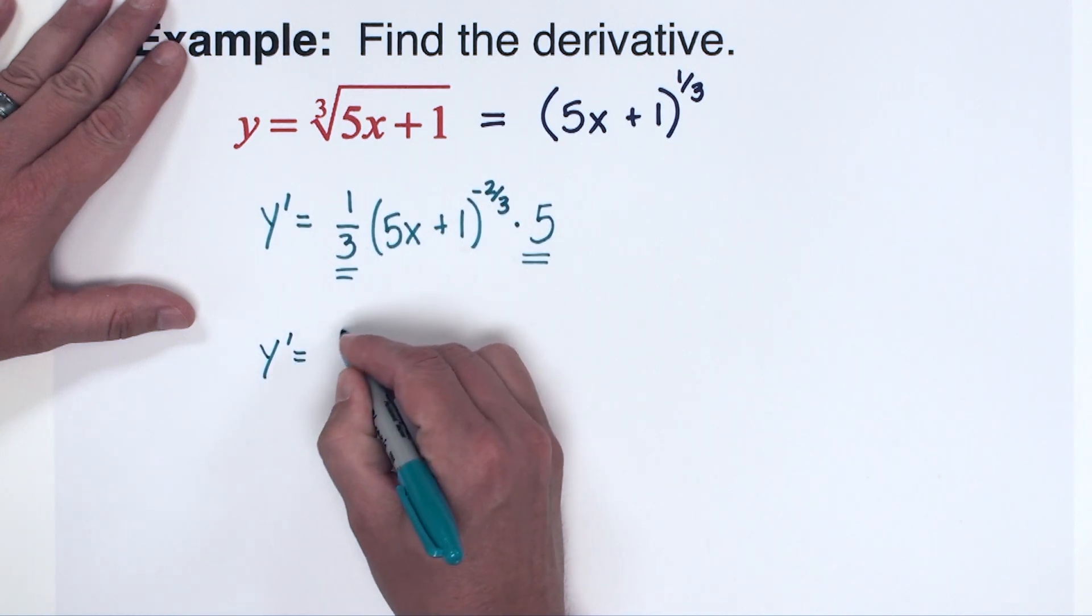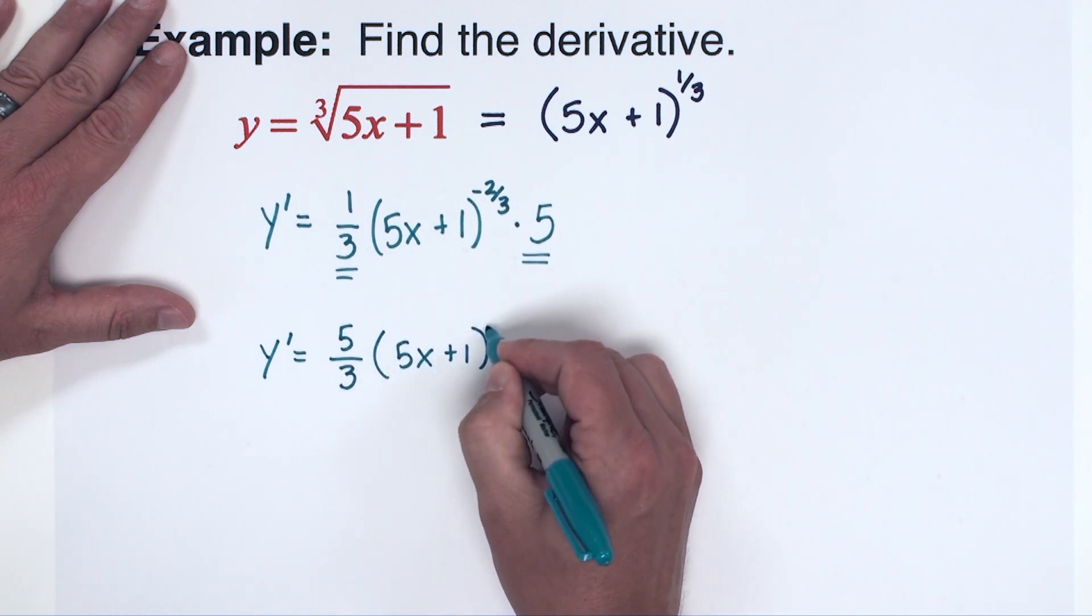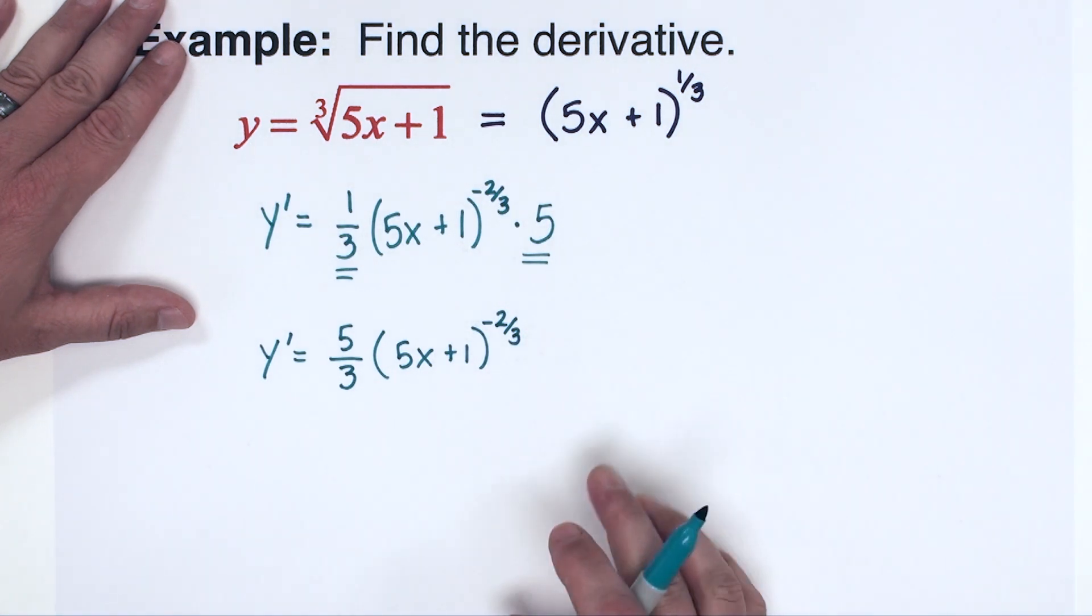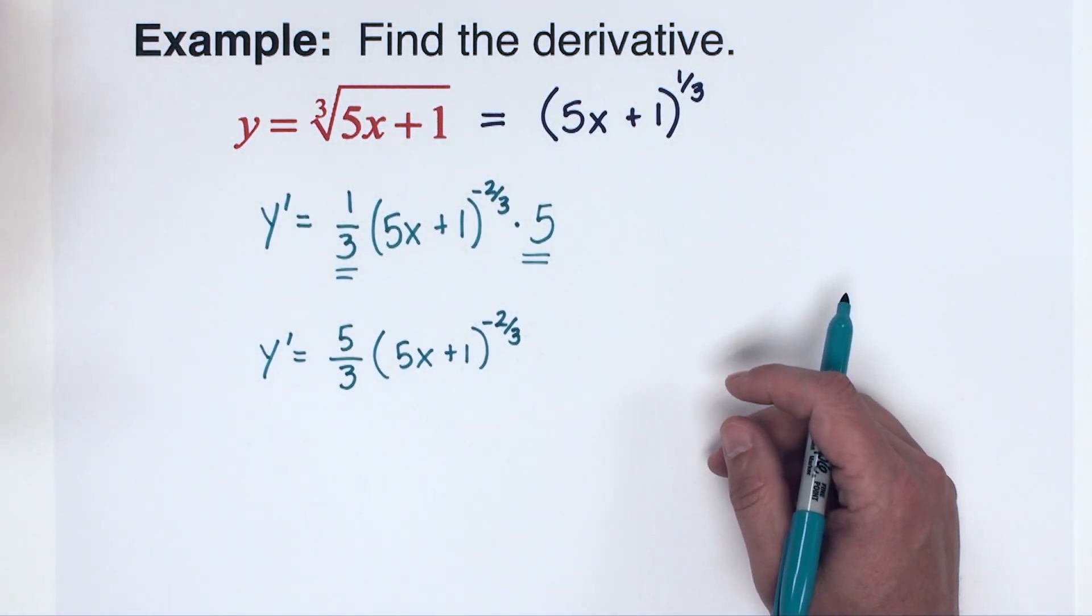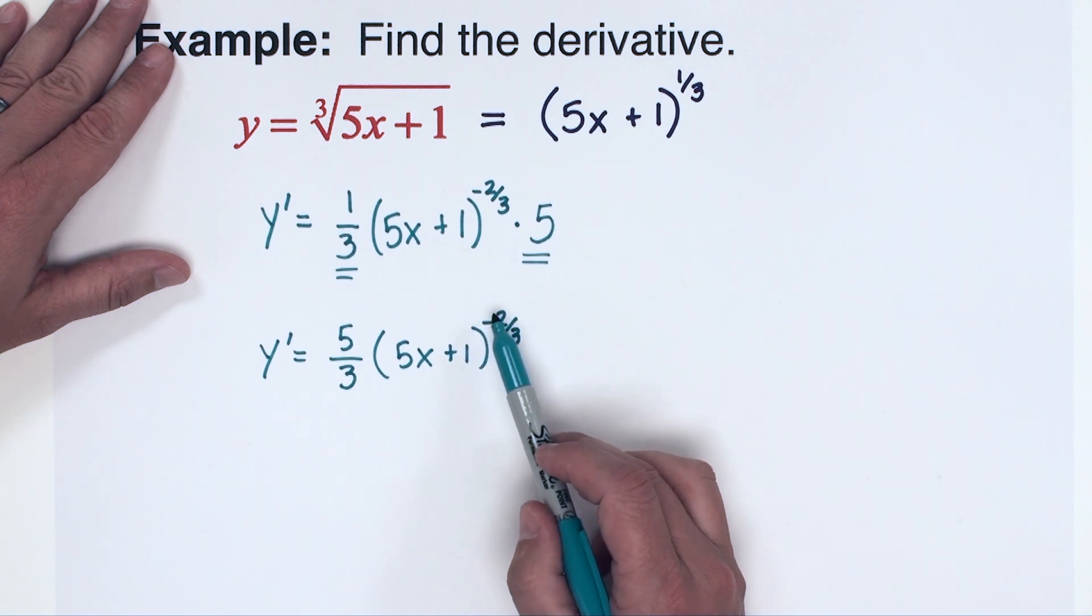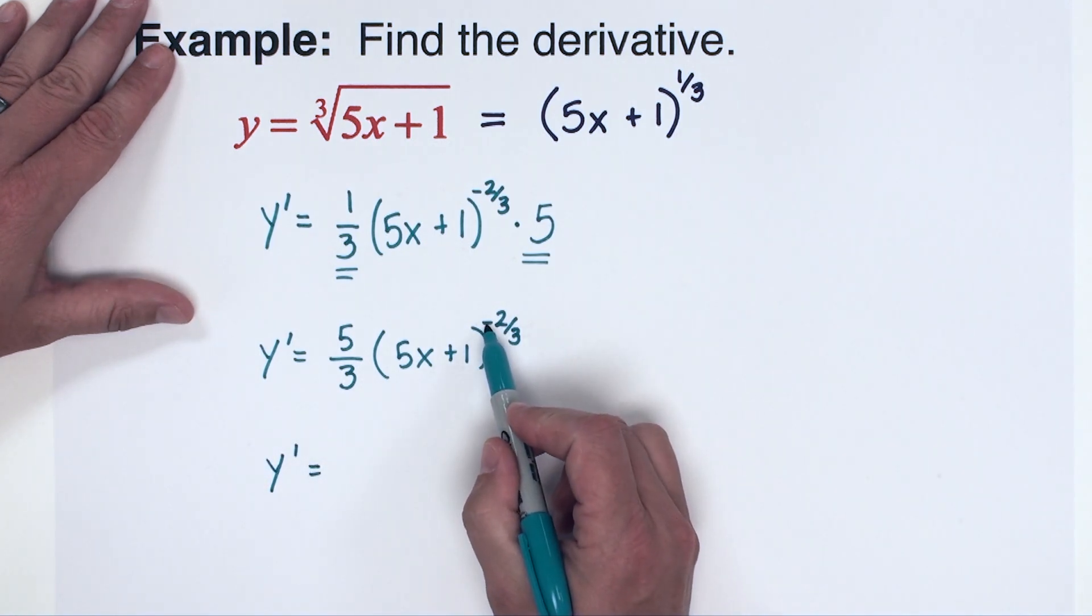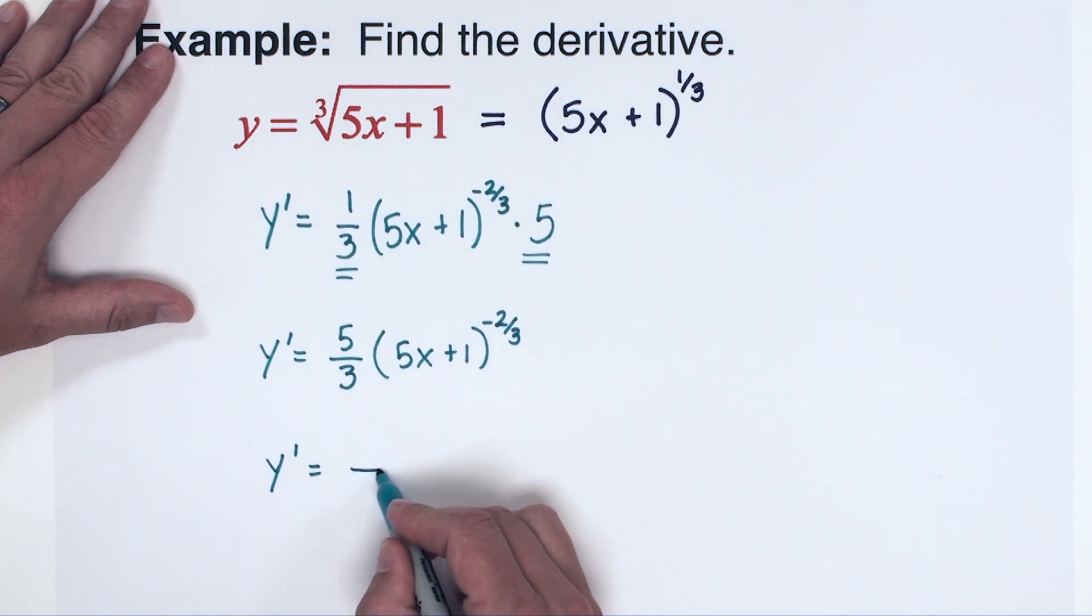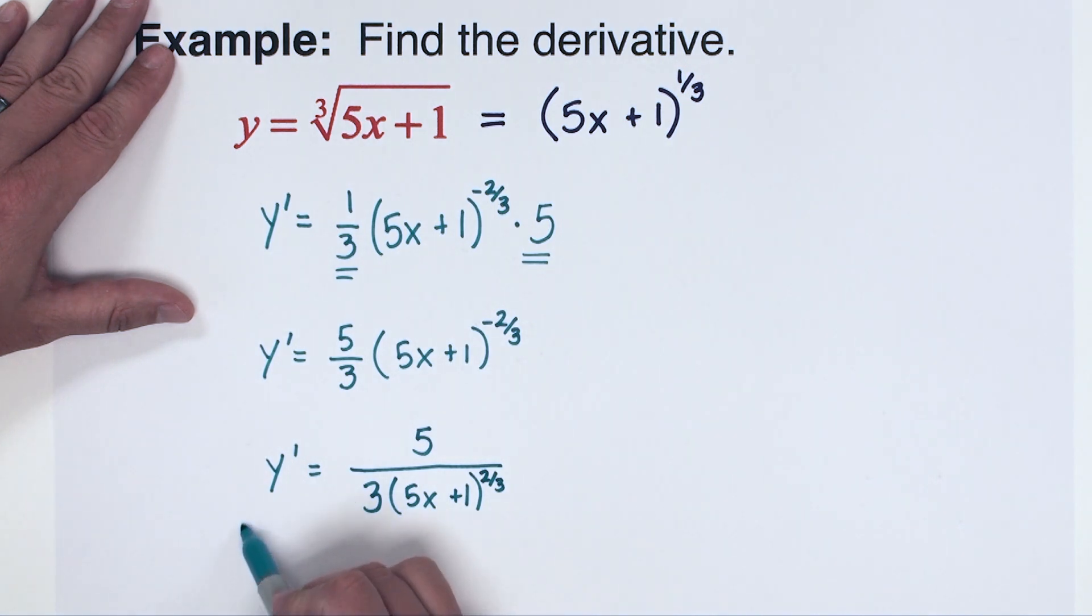Okay, I am going to go ahead and multiply these two factors together. So y prime is equal to 5/3 times quantity 5x plus 1 to the negative 2/3 power. Again, like I explained in the last example, you're going to now just rewrite this to the point where you're happy with how it looks simplified. I typically just like the exponents to be positive in my final answer. So y prime is equal to, and to fix that I'm going to bring it down to the denominator. So 5/3 with 5x plus 1 to the positive 2/3 power in the denominator. I would consider that to be finished.